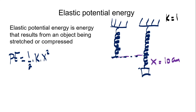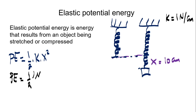Let's say K is 1 Newton per centimeter. The elastic constant K is how much force is needed to stretch an object. It is measured in Newtons per meter, or sometimes Newtons per centimeter.